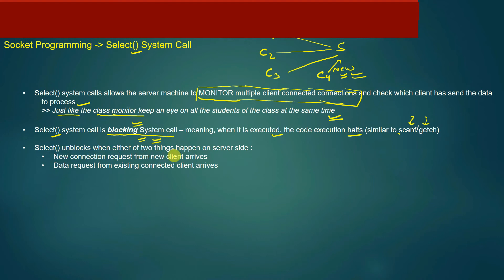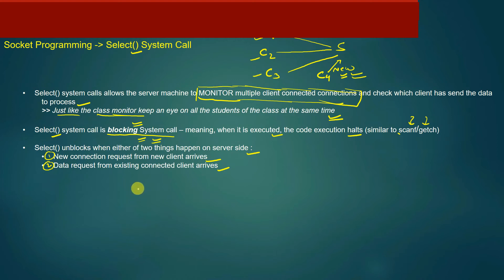The select system call unblocks when either of two things happen: first, when the server receives a new connection request from a new client (e.g., client C4 sending a connection initiation request); or second, when a data request arrives from an existing connected client such as C1, C2, or C3. The server unblocks from select when either of these two events occurs.